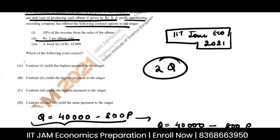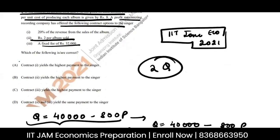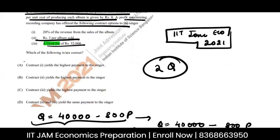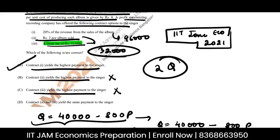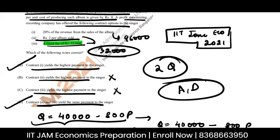Let's see case 3: a fixed fee of ₹32,000. So the singer is anyway getting ₹32,000. So in case 1 the singer got ₹96,000; in cases 2 and 3 he is getting ₹32,000. Therefore contract 1 yields the highest payment — correct. Contract 2 yields the highest — wrong. Contract 3 yields the highest — wrong. Contracts 2 and 3 have the same payment — correct. So the correct answer is A and D.